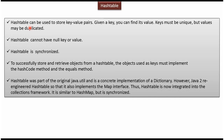Hash table can be used to store key and value pairs. For a given key, we can find the corresponding value. Keys must be unique but values can be duplicated, and hash table won't accept null key or null value. Hash table is synchronized, and it is a legacy class similar to hash map, except hash table is synchronized and hash map is not synchronized.